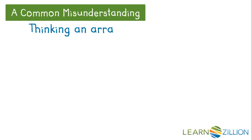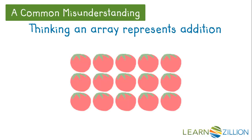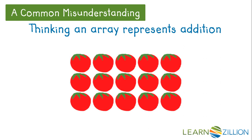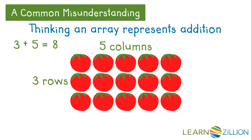Some students think an array represents addition. This array has three groups of tomatoes with five tomatoes in each group — three rows and five columns. Three plus five equals eight. But an array does not mean to add the rows and columns.